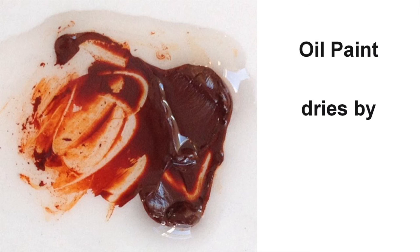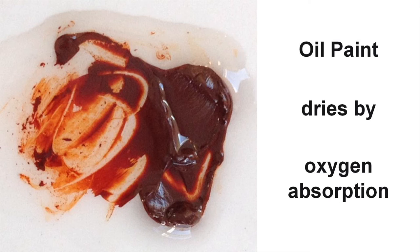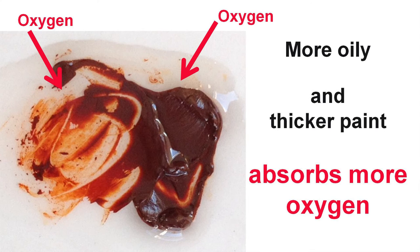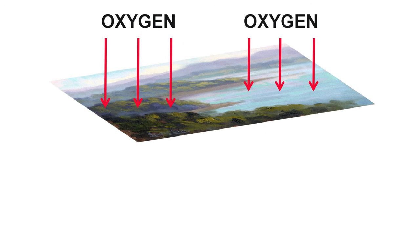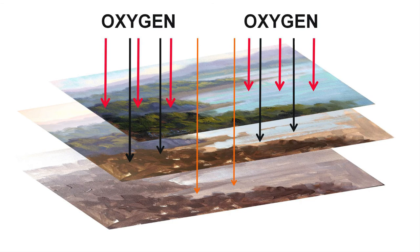Oil paints dry by oxidation — they absorb oxygen, which makes them harden and eventually dry. More oily or thicker paint needs to absorb more oxygen to dry than less oily or thinner paint. Also, top layers tend to absorb more oxygen than lower layers, as they are in direct contact with the air. So having more fat moisture in the top layers will make them dry slower than the other layers.